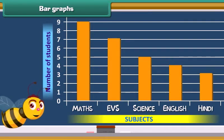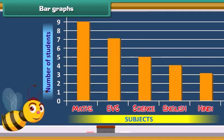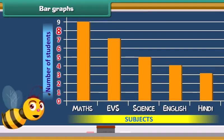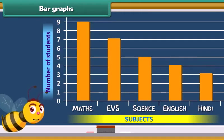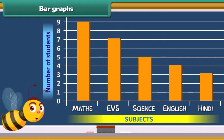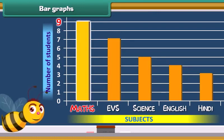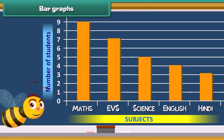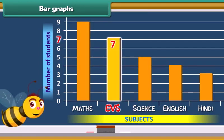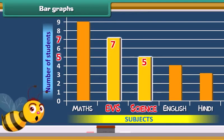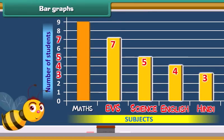In the given graph, subjects are listed at the bottom and number of students is given at the side of the bar graph. In this graph, nine blocks tell us about the number of students who like maths. Similarly, there are seven blocks in EVS, five blocks in science, four blocks in English, and three blocks in Hindi.